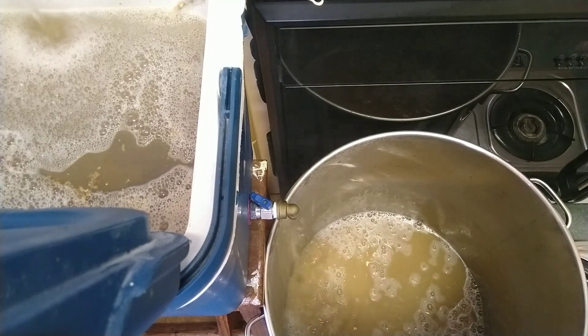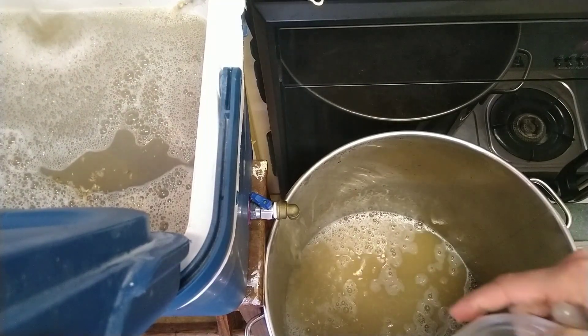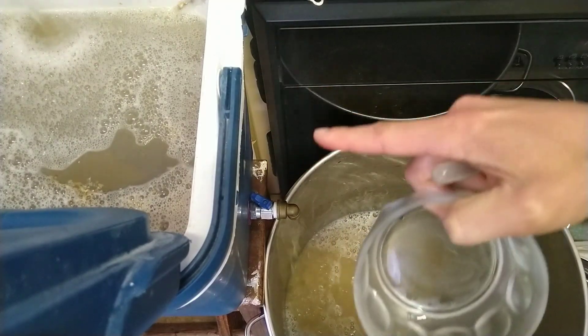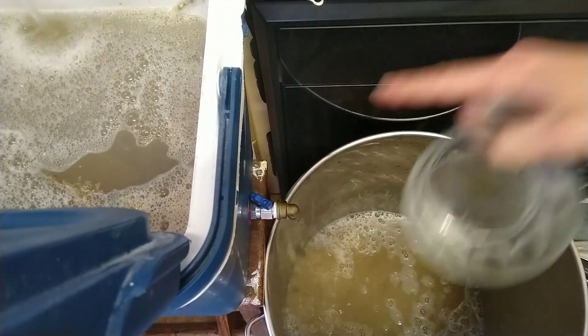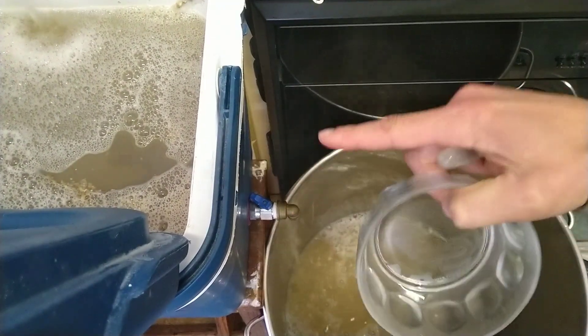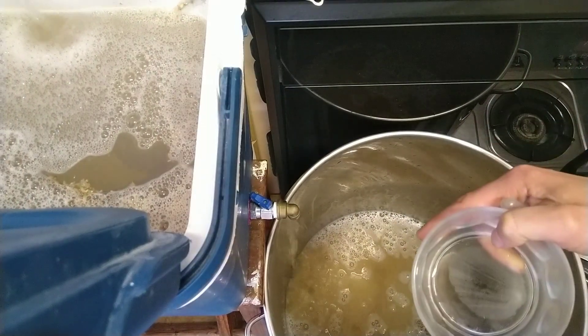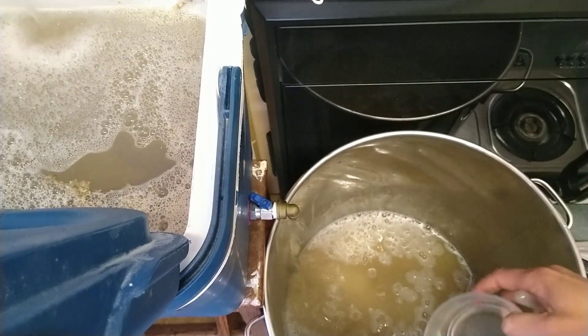One gotcha to watch out for is over-diluting your wort. You can keep putting water through the mash tun, but each time you're taking out more sugar, and the less sugar there is because it's more water, the more you're diluting.